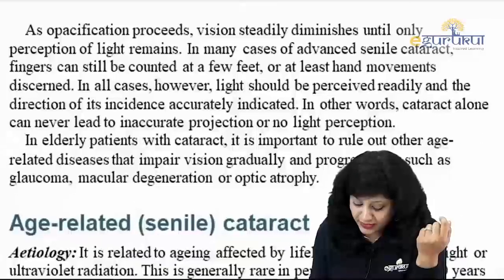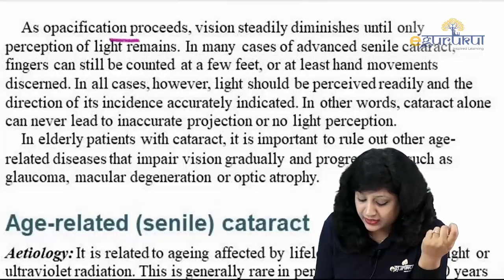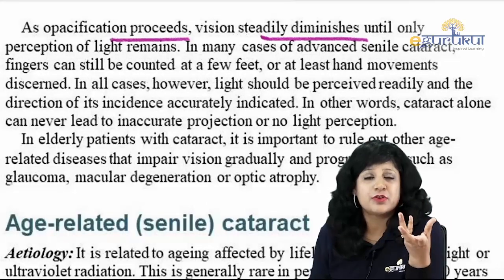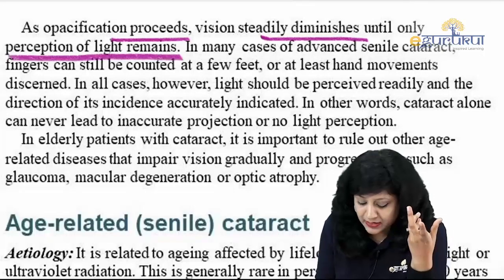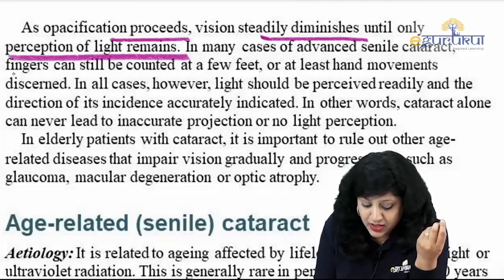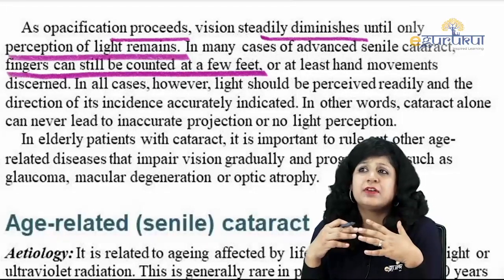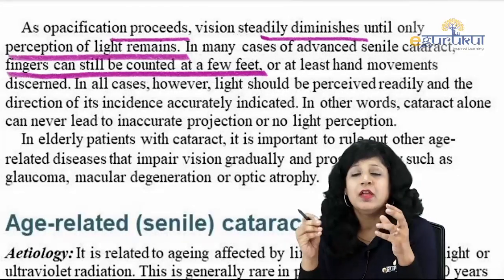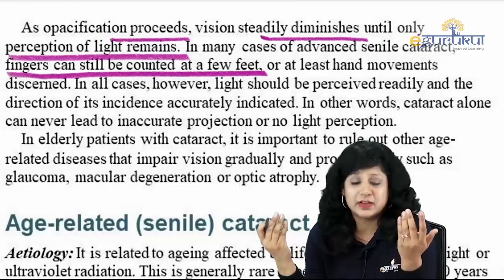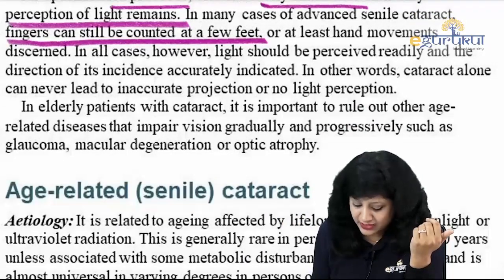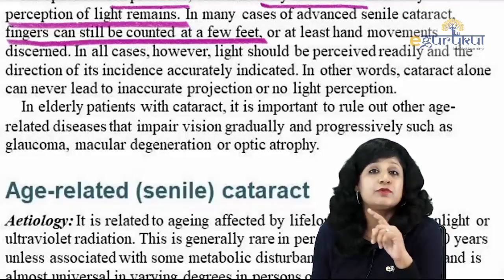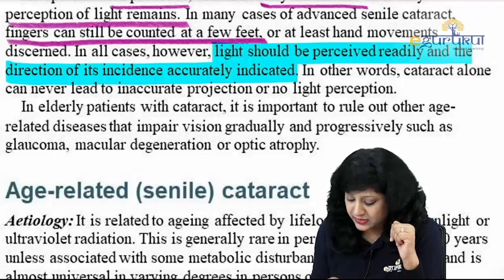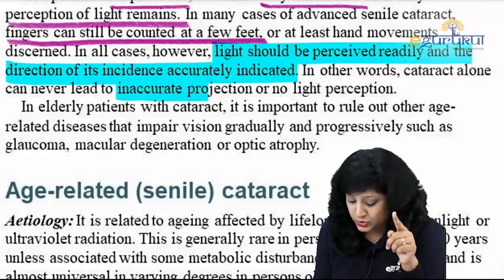As opacification proceeds, vision decreases until only perception of light remains. In mature or hypermature cataract you expect just hand movement, finger counting, or PL positive. In all cases however, light should be perceived and the direction of incidence accurately indicated. Importantly, cataract alone can never lead to inaccurate projection or no light perception.